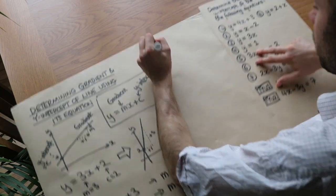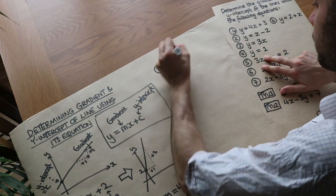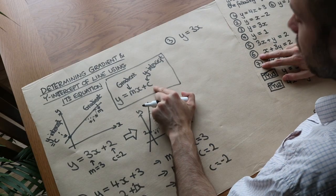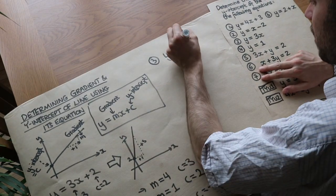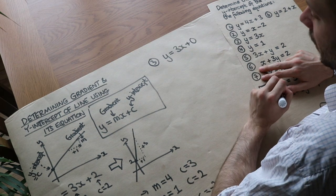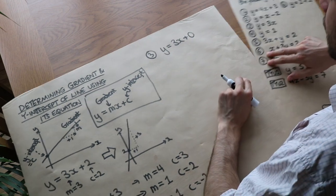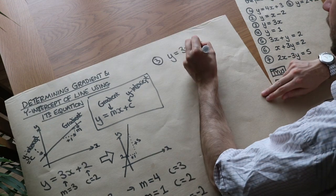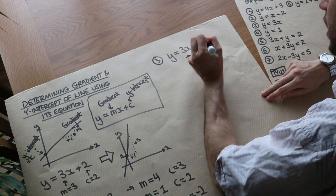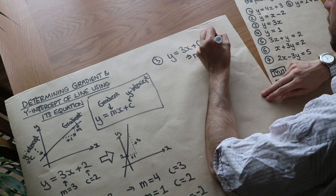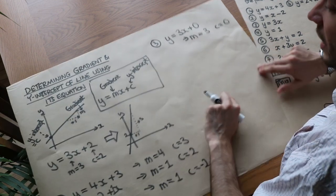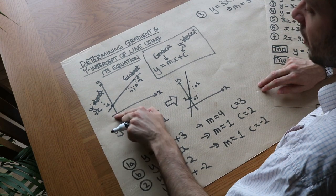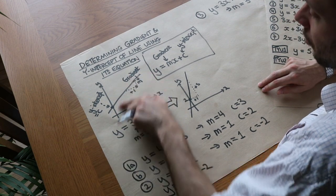We've got y equals 3x. Notice this time we don't have a plus c, but we could just put plus 0 there — that doesn't change the equation. That means the gradient is equal to the number in front of x, which is 3. And the y-intercept c is 0. If the y-intercept is 0, that means it's going to cut at the origin, which means the line goes through the origin.